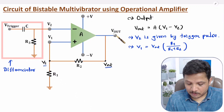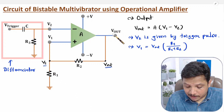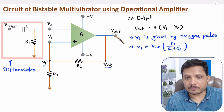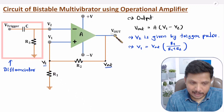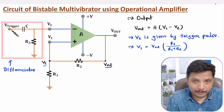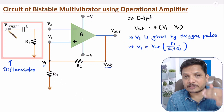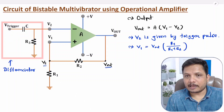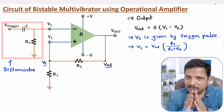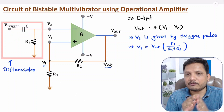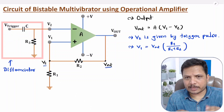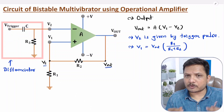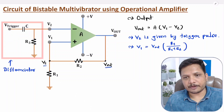So transition from plus V to minus V and minus V to plus V happens by trigger pulse. Otherwise, output stays constant. I hope now it is clear to you. If there is anything you would like to share, please note it down in the comment section. I will be happy to help you. Thank you so much for watching this video.